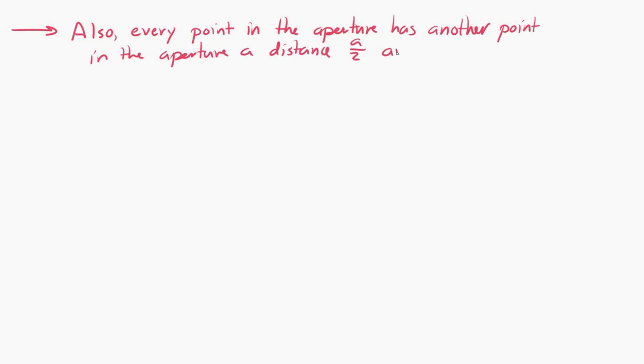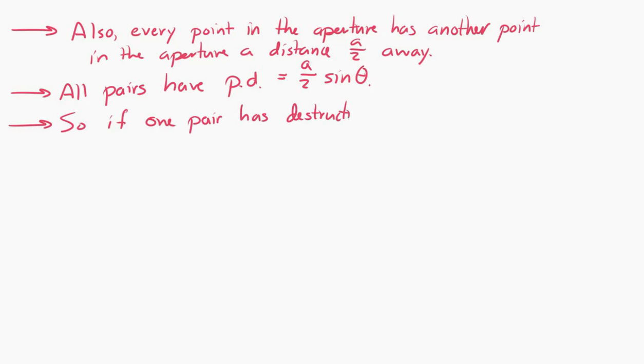Okay, now here comes the big point. At that point on the screen, every single point in the aperture will have another point in the aperture. And each pair has a path difference a over 2 sine theta. So if one pair of points has a destructive interference over here on the screen, every pair inside that aperture will have destructive interference. And that's the trick, and that's the usefulness of Huygens' principle.